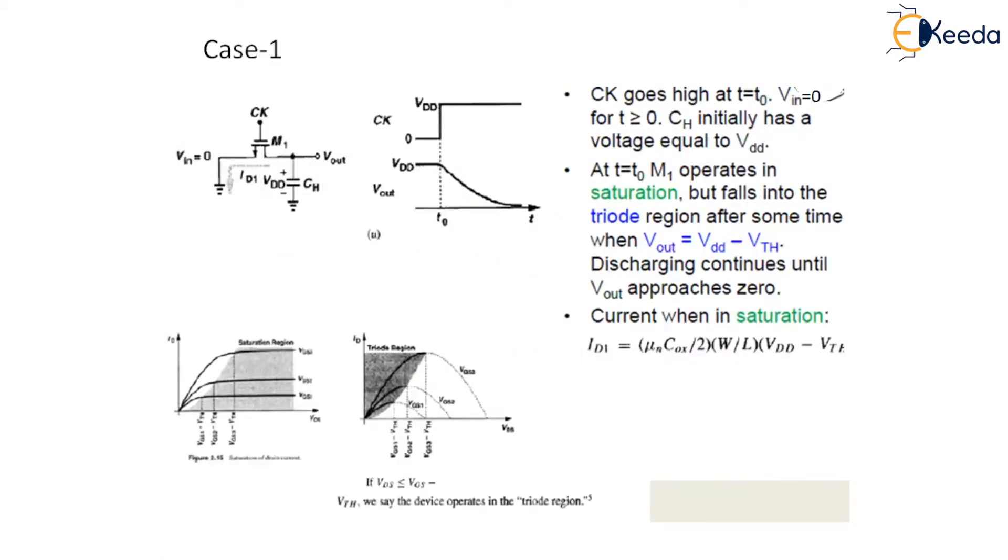Now to understand how this circuit works and samples the input, let us first consider the simple cases depicted here in figure A where the gate command CK goes high at T equals to T0. We have assumed that Vin is equal to 0 and the capacitor has an initial voltage equal to VDD. At time T equals to T0, this M1 senses the gate source voltage which is equals to VDD and a drain voltage which is also equals to VDD. So VGS is also equals to VDD because CK is this gate voltage VDD and this source voltage is 0.